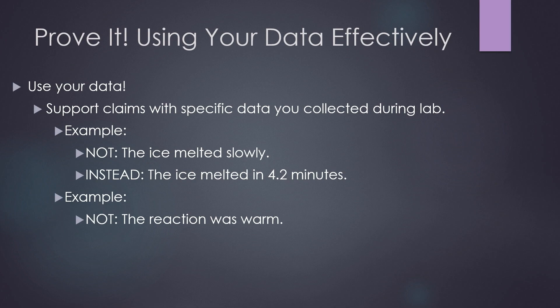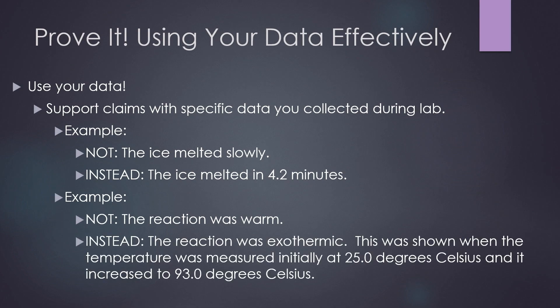Instead, you should say, the ice melted in 4.2 minutes. Here's another example. You don't want to say, the reaction was warm. Again, it's too vague. It's too imprecise. Instead, try, the reaction was exothermic. This was shown when the temperature was measured initially at 25.0 degrees Celsius and it increased to 93.0 degrees Celsius. In every body paragraph, you must prove what you're saying by using similar data and calculations from your own experiment to support your argument.